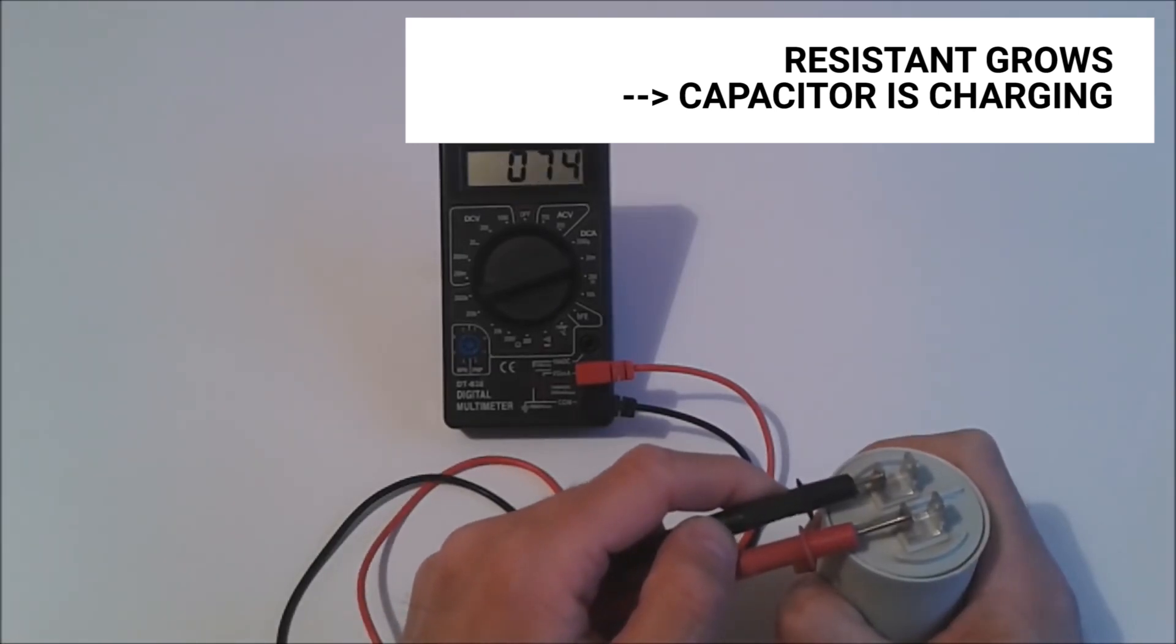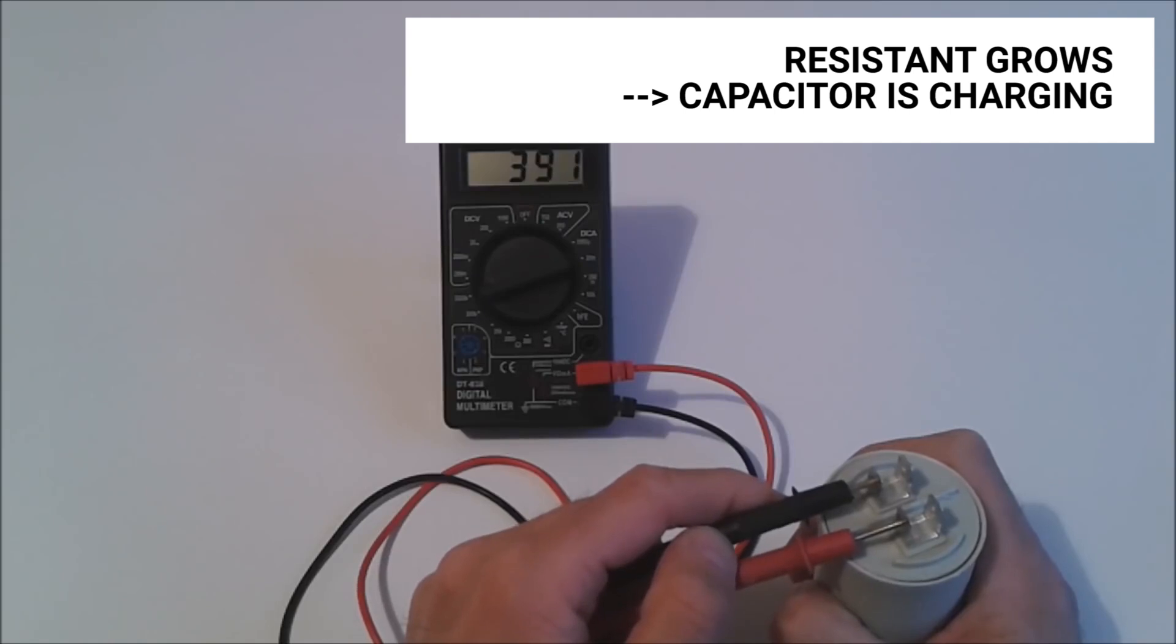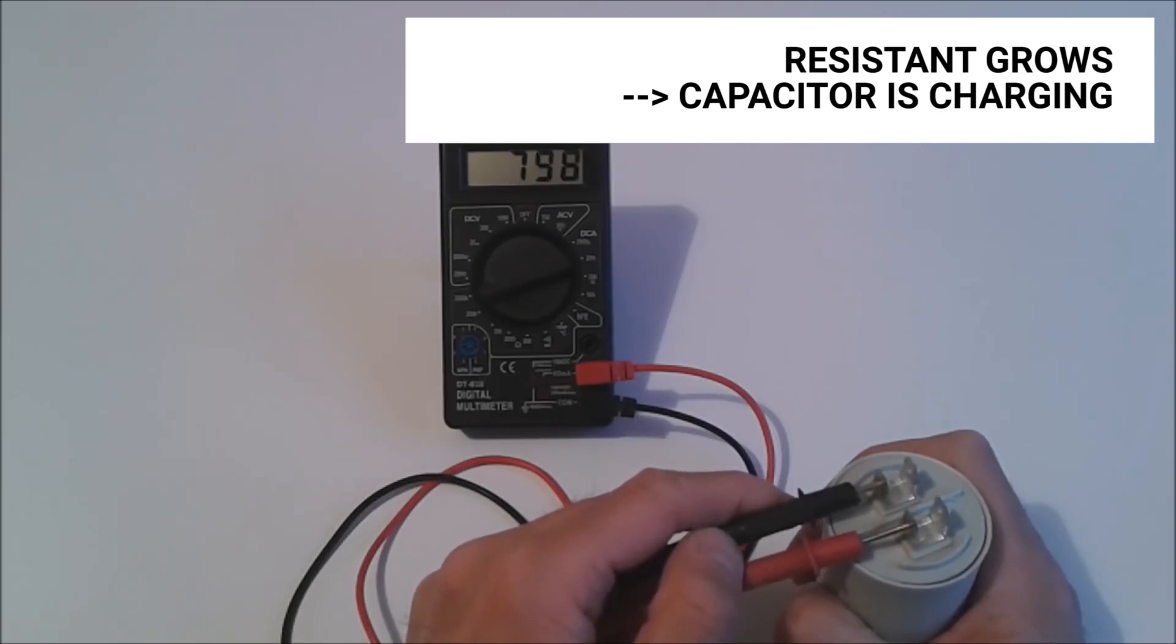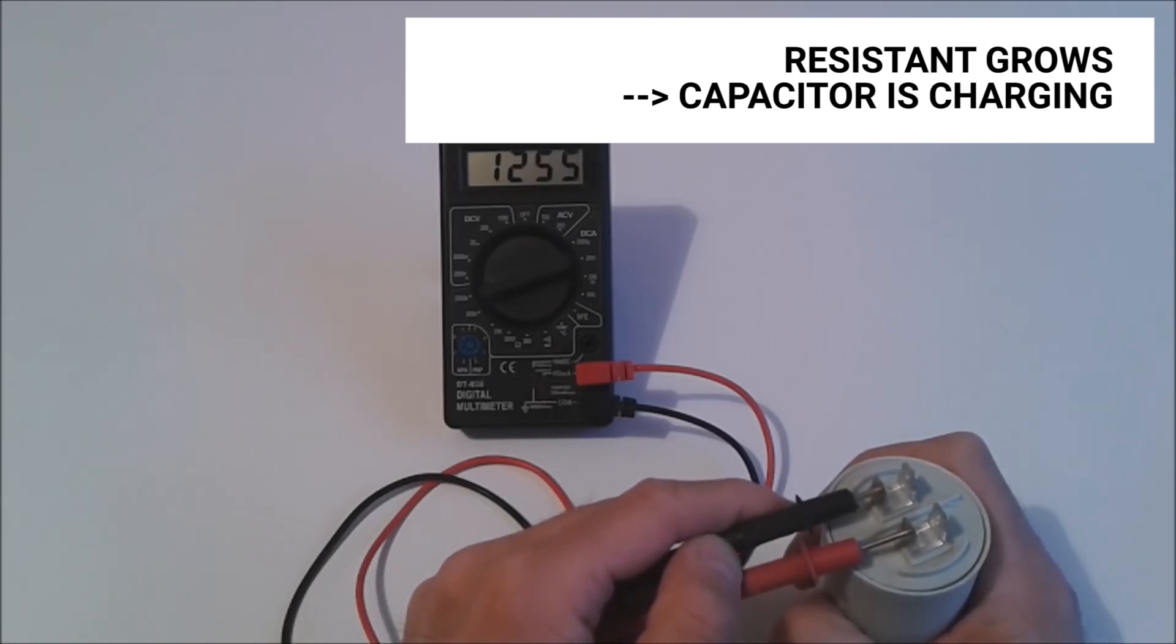We see that the resistance is growing. The process is a bit slower than with the previous capacitor, because now it is a capacitor with higher capacitance than the one before. The previous one had 8 microfarads and the big one 40 microfarads. Five times the capacitance, and because of that this charging process is slower.